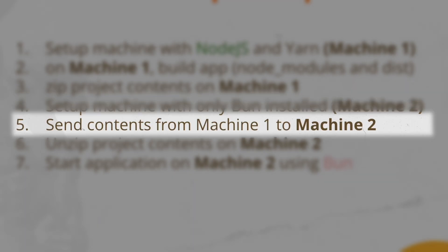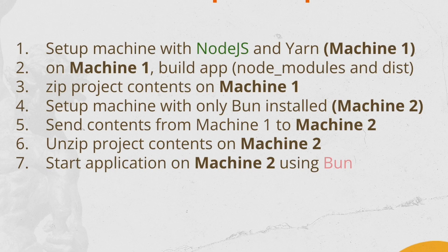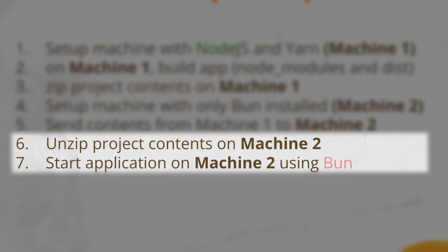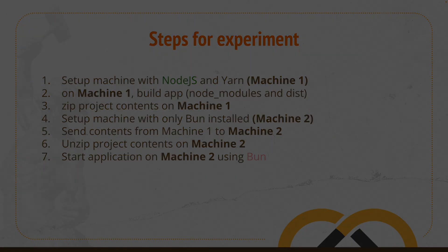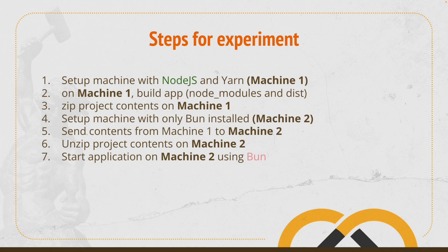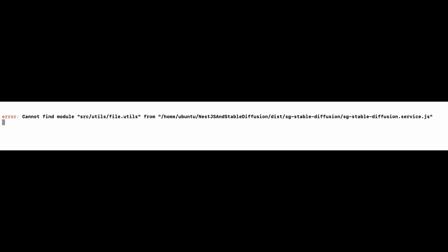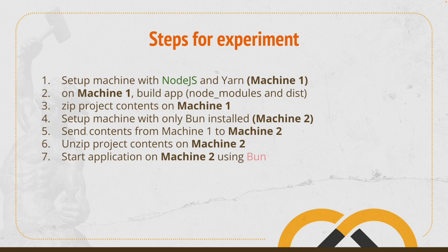We're going to send the zipped project from Machine1 to Machine2, then on Machine2 unzip the project and run it using Bun. One important thing to mention: I could not use only Bun on Machine2 — I had to build the project with Machine1 using Node and Yarn, because when I tried to build using only Bun, some dependencies between files got broken. This is why Machine1 was required.